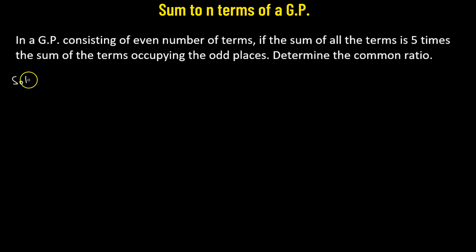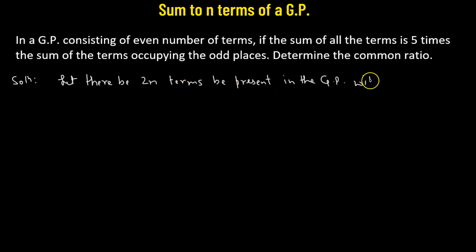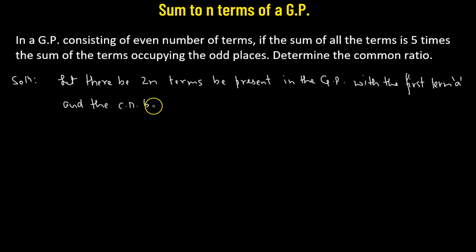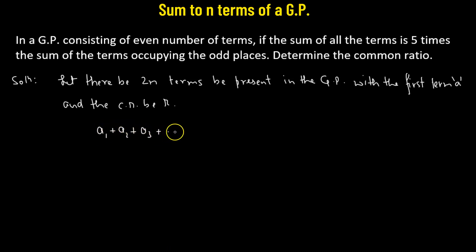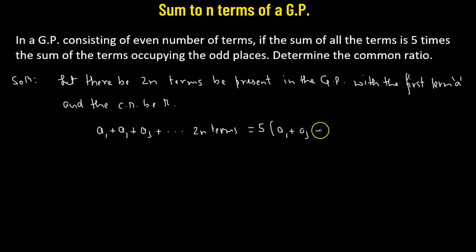Let's say that there are 2n number of terms in the GP, with the first term given by 'a' and the common ratio represented by 'r'. The sum of all the terms — a1 plus a2 plus a3, all the way up to the 2n-th term — equals 5 times the sum of the terms occupying the odd places, that means a1 plus a3, all the way up to a(2n−1).